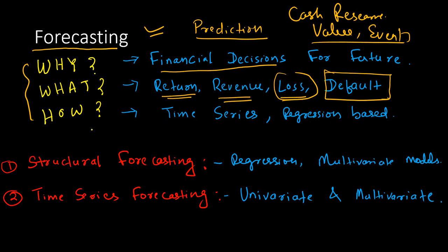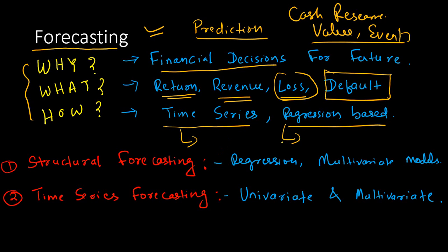How is forecasting done? Primarily, you will come across two types of forecasting. One is time series forecasting, and the other one is regression-based forecasting. In time series, you will be using AR, MA, ARMA, ARIMA models or exponential smoothing. Whereas regression-based models include linear regression, quantile regression, Bayesian regression, and so on.